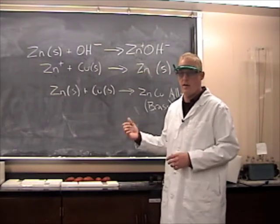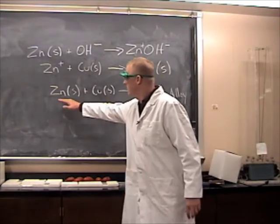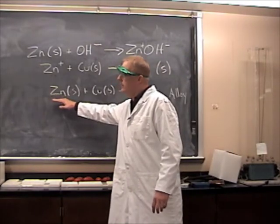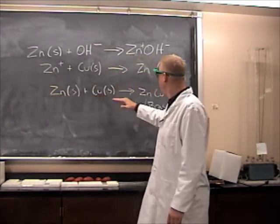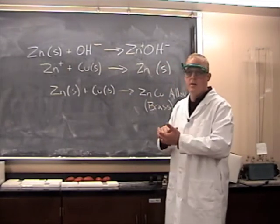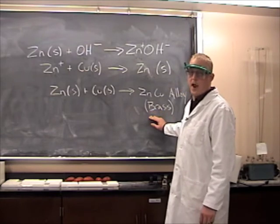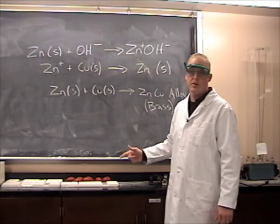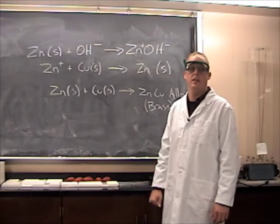So you have zinc, you have copper, and you mix them together by heating them up. Zinc, copper, and you get a zinc copper alloy. The zinc and the copper together form an alloy and that alloy is brass. And that's the chemistry behind turning copper into gold.